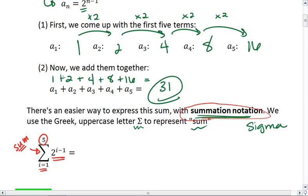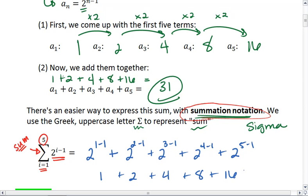So basically what this summation notation is telling us is start with i equals 1. We do 2 to the 1 minus 1, and then we add it to the next term, plugging in 2 for i. We get 2 to the 2 minus 1, and 2 to the 3 minus 1, 2 to the 4 minus 1, and then 2 to the 5 minus 1. We already know that this is 1, 2, 4, 8, 16, and that these add to 31.